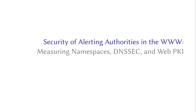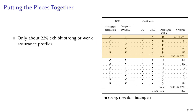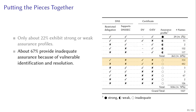Now we can use our threat model to merge the previous results into one holistic picture and qualify the security of alerting authorities in terms of assurance profiles. As you can see, only 2% provide a strong assurance profile, 20% weak assurance profiles, and the remaining 78% provide inadequate assurance profiles. The main reason for inadequate assurance profiles is lack of DNSSEC combined with DV certificates, and as mentioned, 15% either provide invalid or no certificates at all.